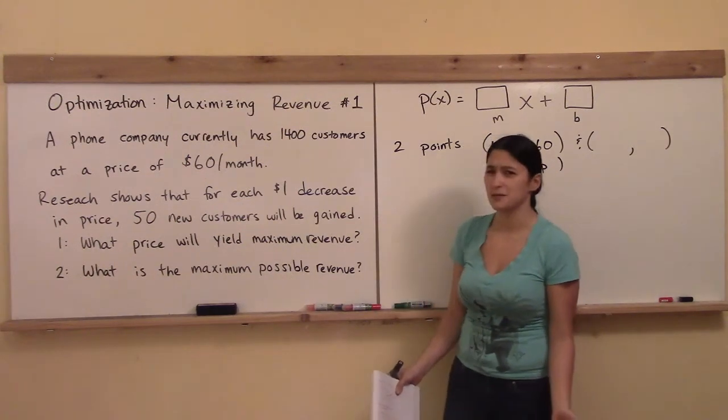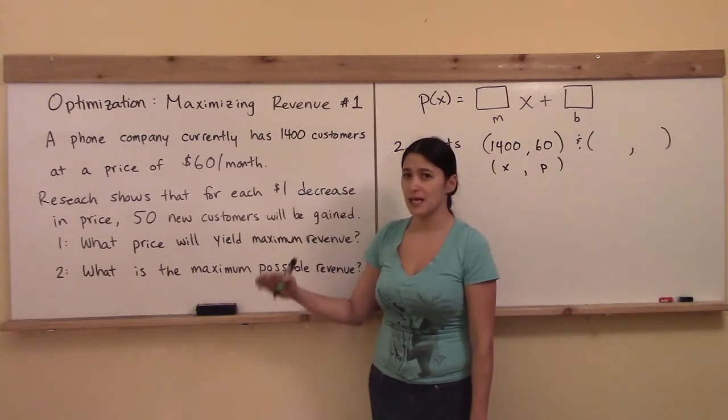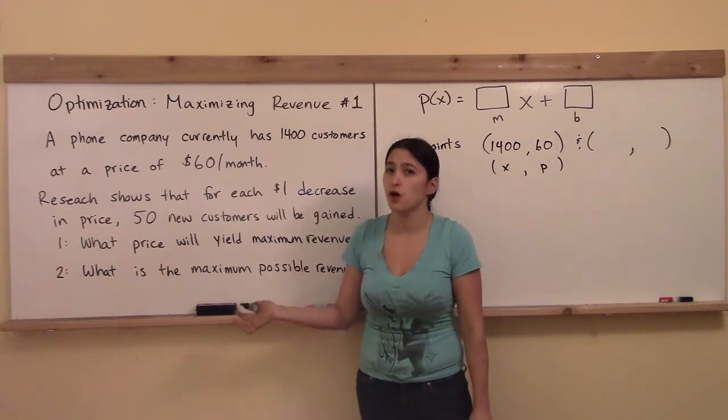Does it mean it's 50 comma 1? No, that's not what it means. It doesn't actually give you the point with these two numbers here, but it kind of leads you on to derive your own next point.